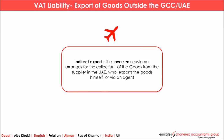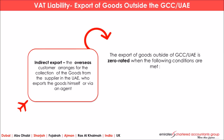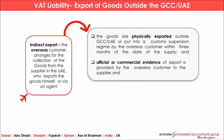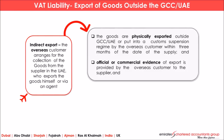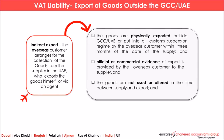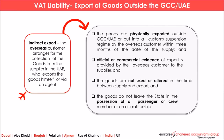In indirect export, the overseas customer arranges for collection of goods from the supplier in the UAE and exports them — either directly or through an agent. The conditions for indirect export to qualify as zero rated are: the goods should be physically exported from the UAE; there should be official and commercial evidence retained by the supplier; during the period of export the goods should not be used or altered; and the goods should not be leaving the state in the possession of a passenger or crew member of an aircraft.